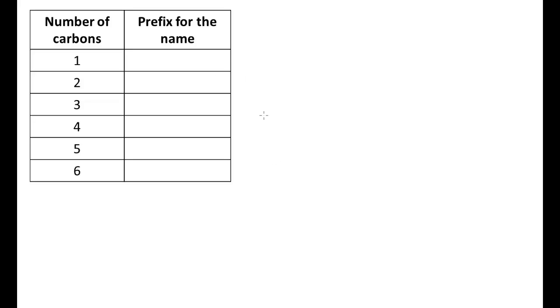This table here is the basis for how you name these compounds, and it's primarily due to how many carbons they have in the longest chain. The way it is named: if we have one carbon, our name will start with meth. If we have 2, eth. 3 is prop, 4 is but, 5 is pent just like the shape, 6 is hex again just like the shape.